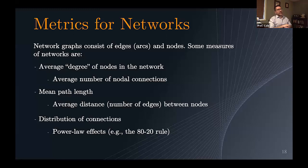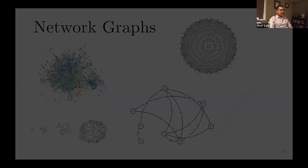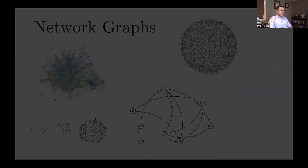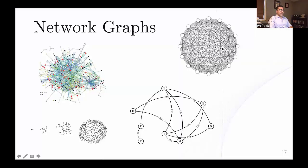So a couple metrics for networks: if you're defining or comparing two networks, you can define average degree of nodes in the network, meaning average number of nodal connections. Obviously, in this case, this would have a higher average node connections versus this one.